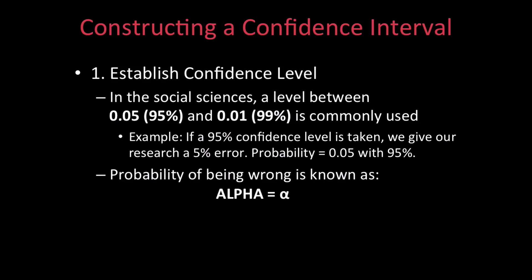Here's an example. If a 95% confidence level is taken, we give our research 5% uncertainty. Therefore, the probability of 0.05 means 95% confidence. The percentage or estimated likelihood of the probability being wrong is known as alpha, or A for short.